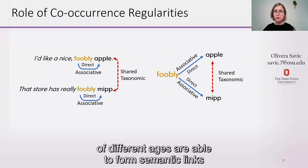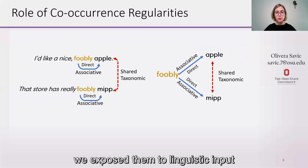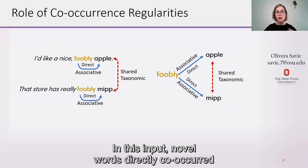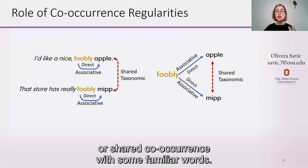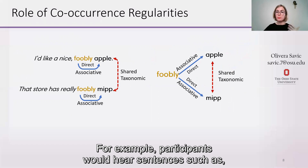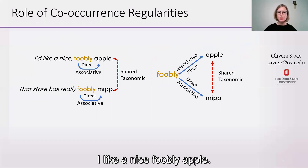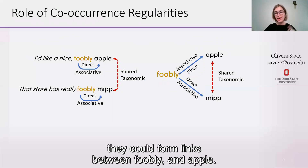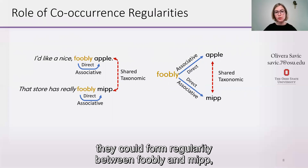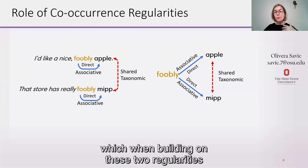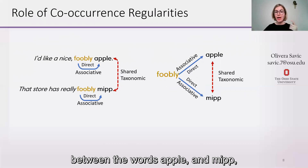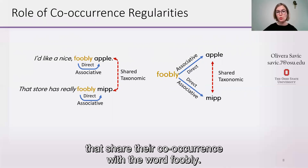To test whether participants of different ages can form semantic links based on direct co-occurrences, we exposed them to linguistic input rich in these regularities, where novel words both directly co-occurred or shared co-occurrences with some familiar words. For example, participants would hear sentences such as 'I like nice foobly apple,' and based on these regularities could form a link between foobly and apple, and between foobly and mip, which could result in forming a shared co-occurrence link between apple and mip.